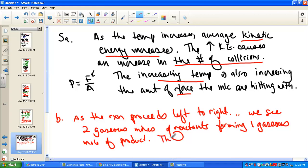as the reactants form products, we see two gaseous moles of reactants forming one gaseous mole of product. This would decrease the number of collisions. The fewer molecules decrease pressure due to fewer molecules.